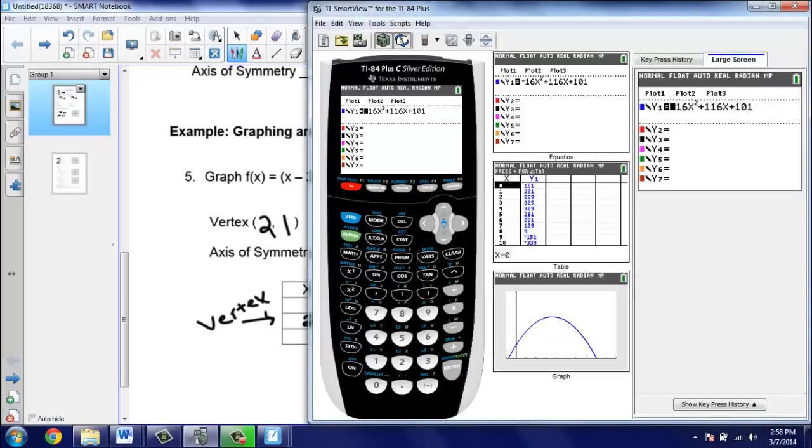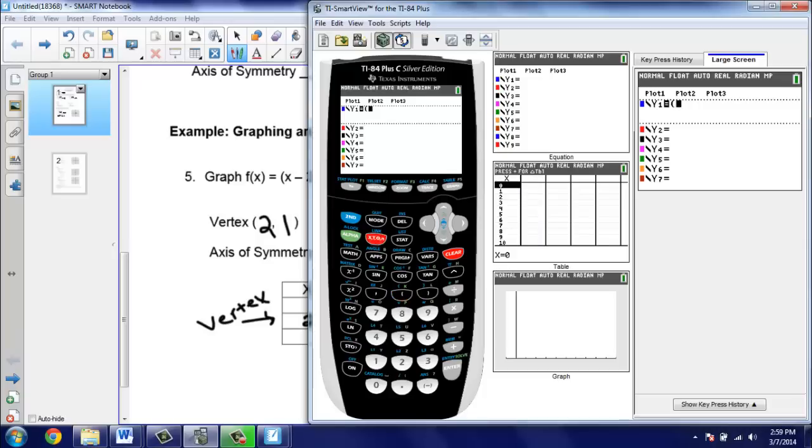So we're just copying that down from before. But we need some more points. So that's when we can have our calculator work for us. So we get our calculator out. Let's go to y equals. We're going to clear out what we have in there from before. And we'll type in the equation. Now you want to make sure you type in the equation exactly how you see it with those parentheses. So this problem starts off parentheses x minus 2, and then close the parentheses. Oops, I missed my subtraction sign. Let me try that one again. Parentheses x minus 2, close the parentheses, square it.